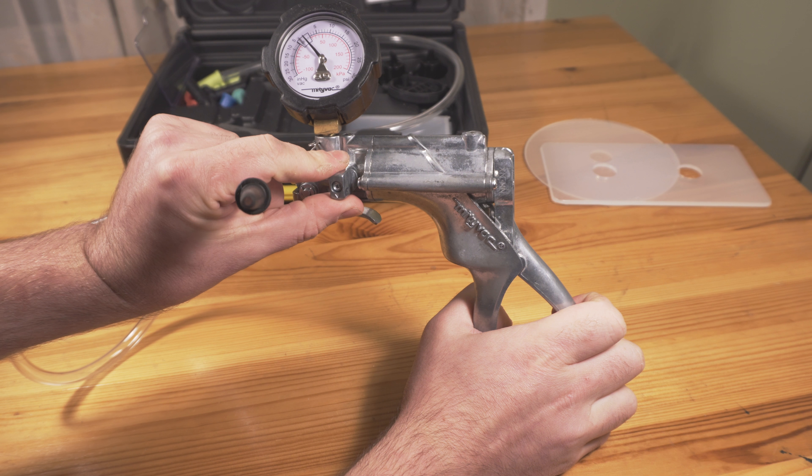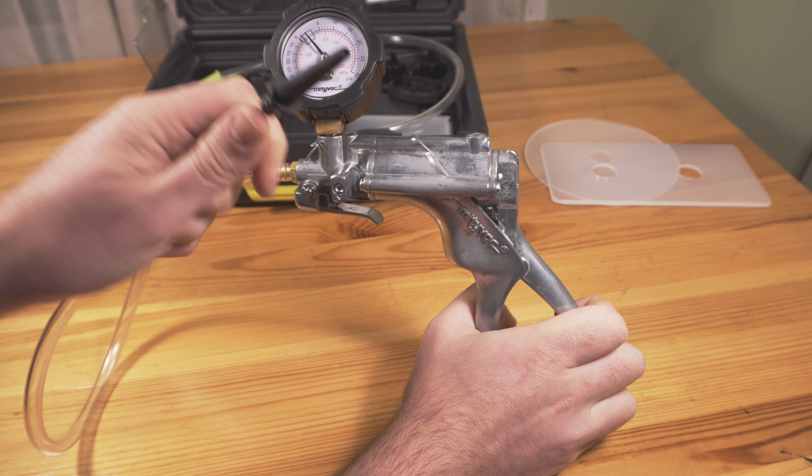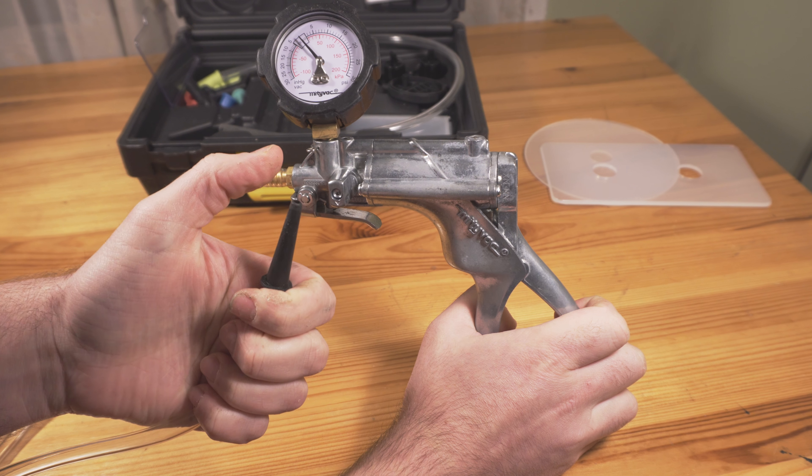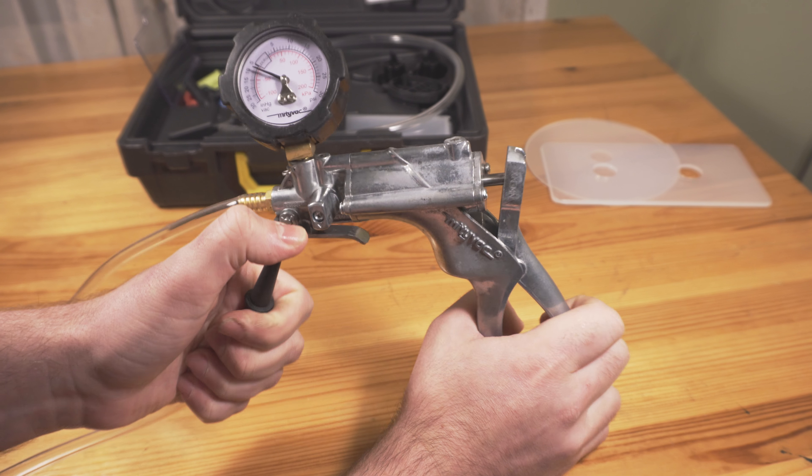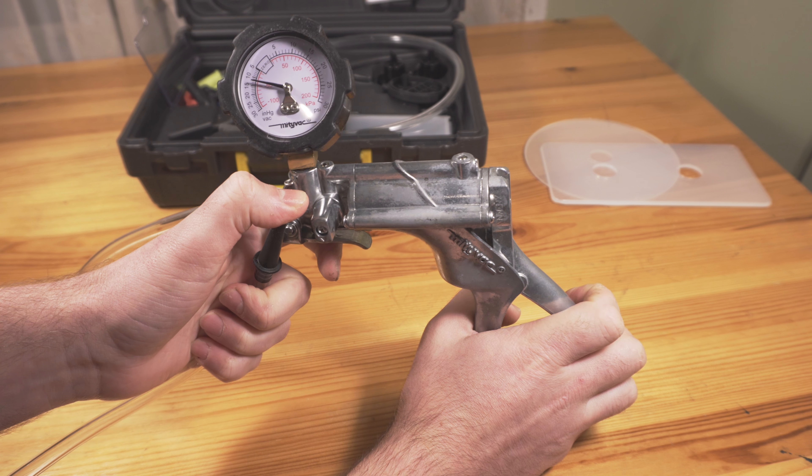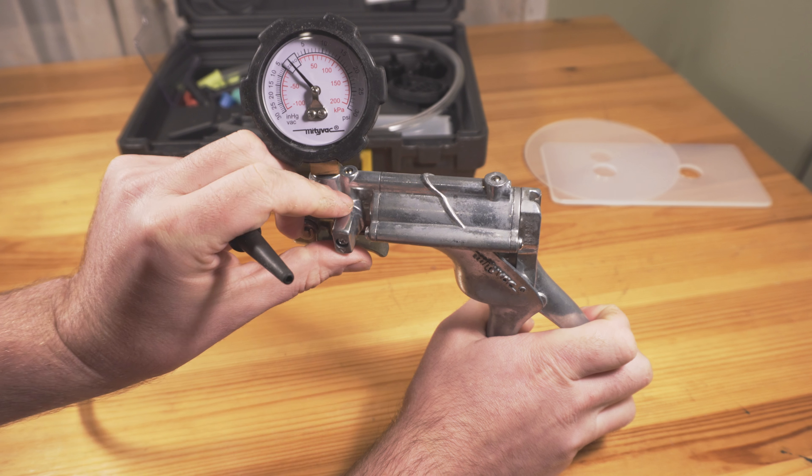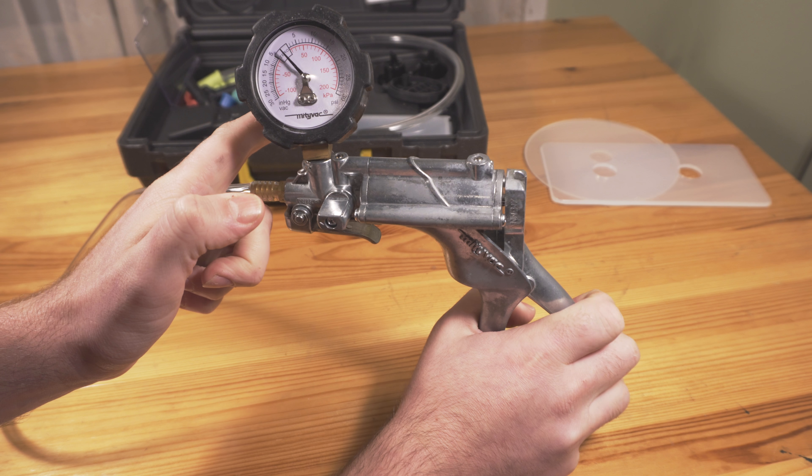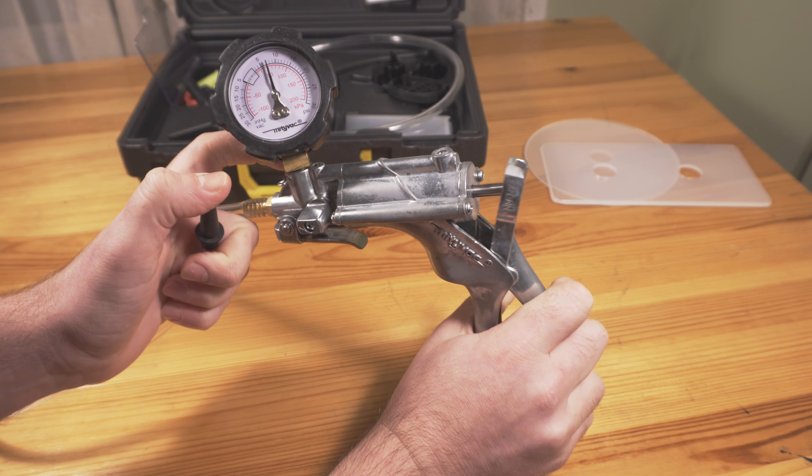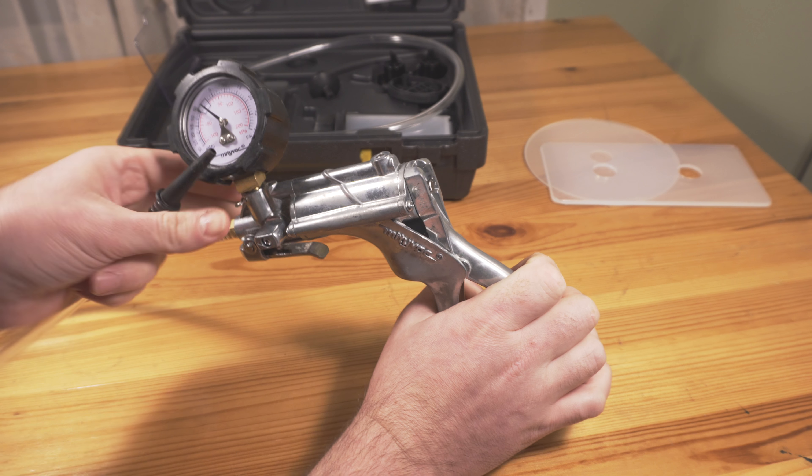So just to simply show how it works, essentially this knob right here changes it from pressure to vacuum. If I just put my finger over the tip of the hose, you can see the arrow is holding a vacuum. If I rotate the lever, I can pump it up and test pressure.